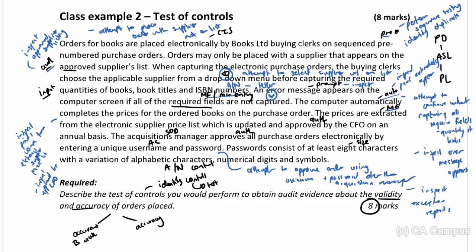Passwords must be at least eight characters, so we attempt to create a password with fewer than eight characters — and we should not be allowed to. Passwords must also consist of alphabetic characters, numerical digits, and symbols, so we attempt to create a password without one of those character types — and we should not be allowed to.